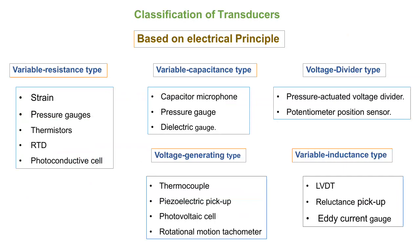Voltage generating type examples are thermocouple, piezoelectric, photovoltaic cell, and rotational motion tachometer. In this type of transducer, they develop their own voltage — self-generating voltage — and these can also be called active transducers. The last type based on electrical principle is variable inductance type. Examples include LVDT, which we have used in the metrology lab, reluctance pickup, and eddy current gauge — all related to a variation in inductance.